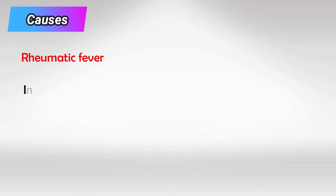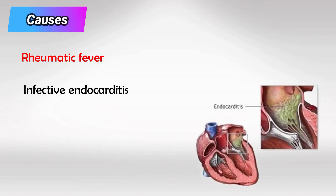The most common causes are rheumatic fever and infective endocarditis — basically any condition that results in inflammation of the mitral valve. Very commonly, mitral regurgitation results in mitral stenosis later on, due to calcification of the once inflamed valve.